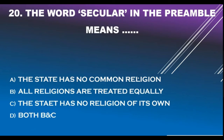Question number 20. The word 'secular' in the Preamble means: Option A - The state has no common religion. Option B - All religions are treated equally. Option C - The state has no religion of its own. Option D - Both B and C. Correct answer is Option D: Both B and C — All religions are treated equally and the state has no religion of its own.